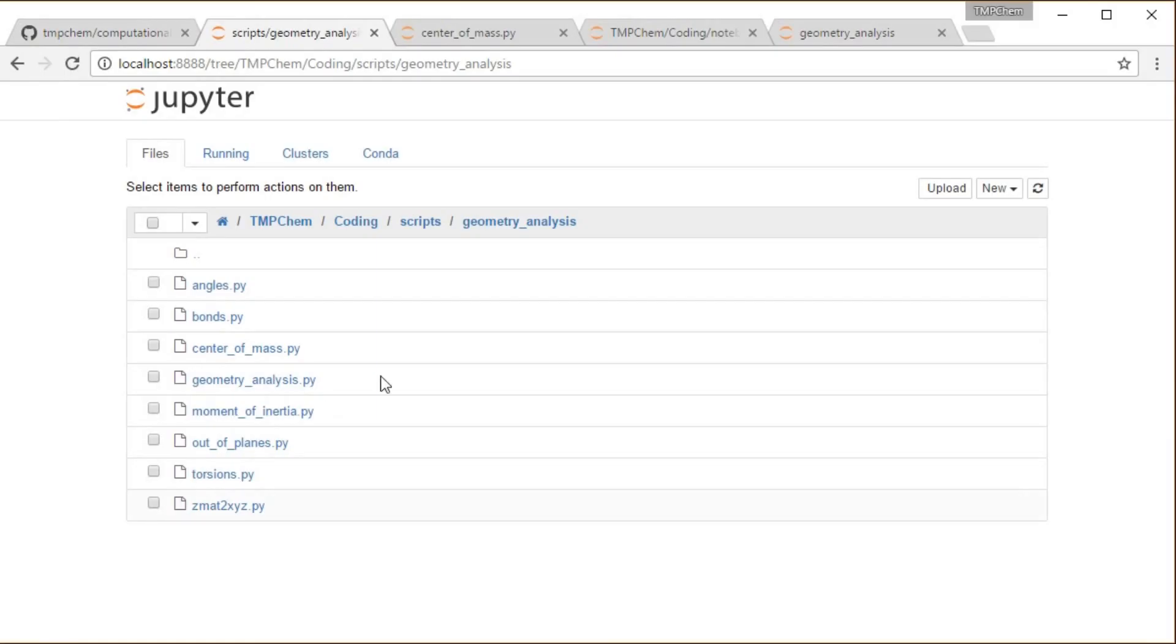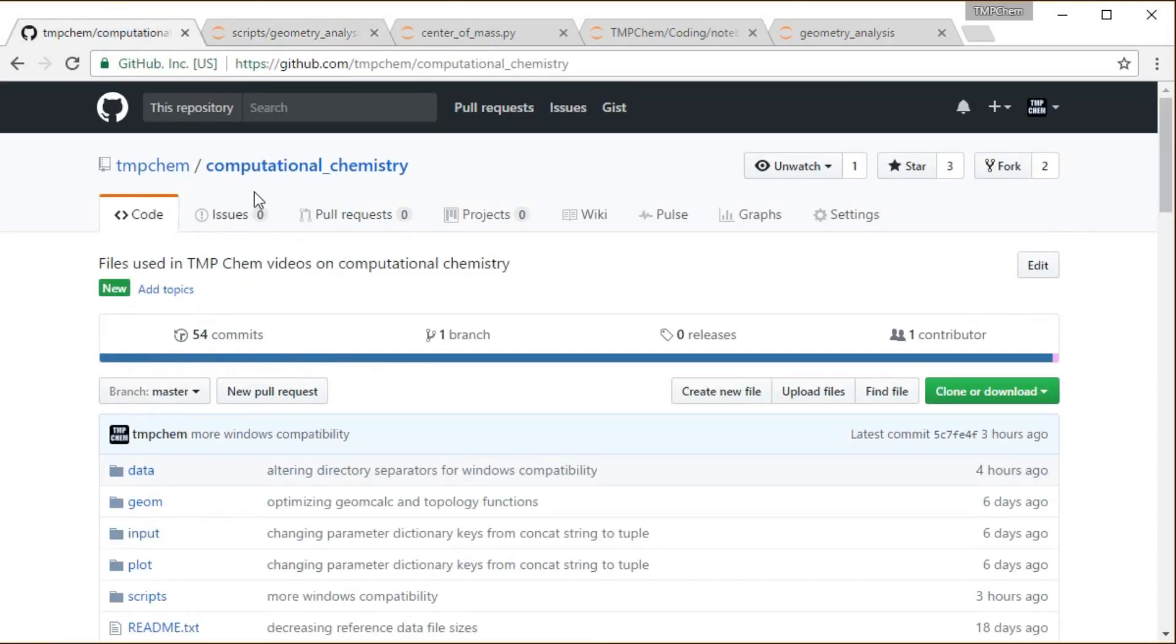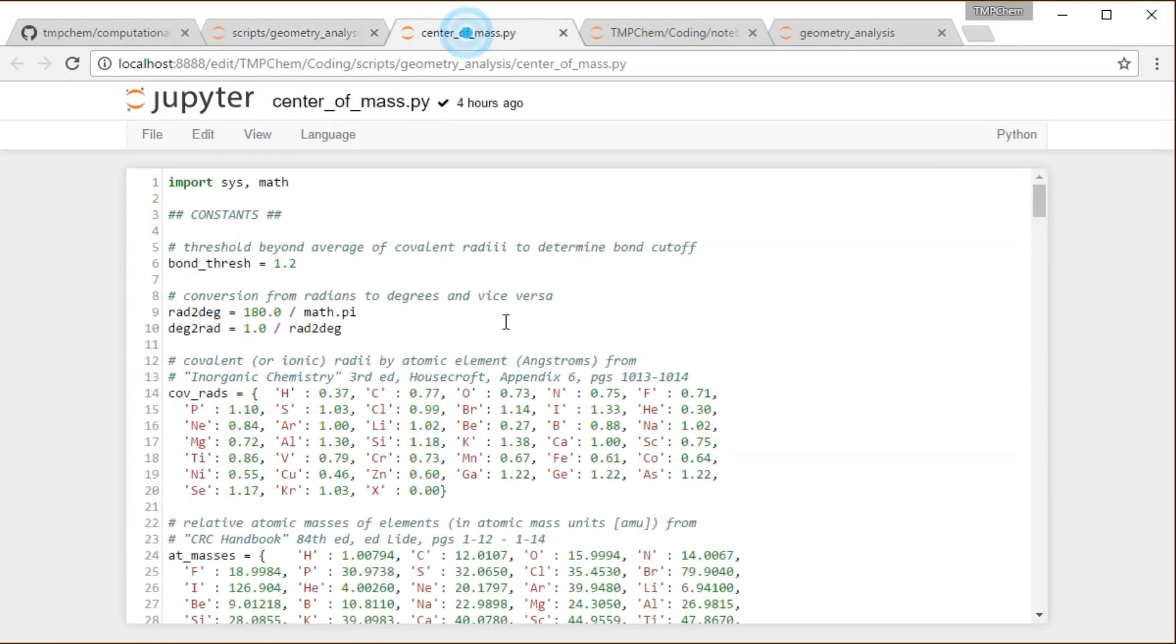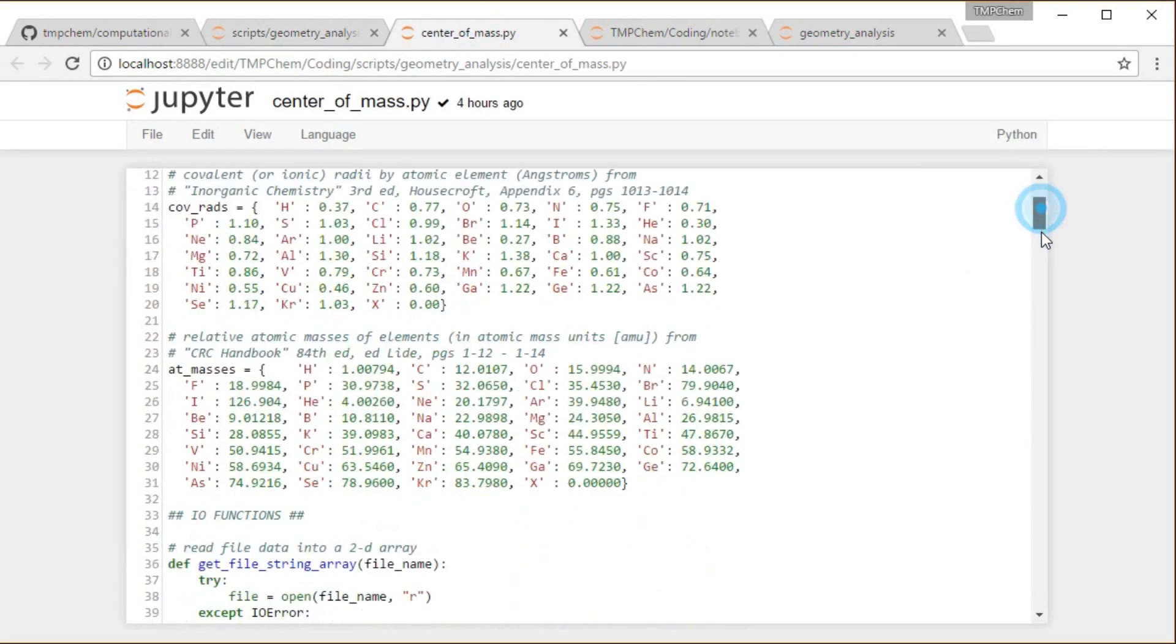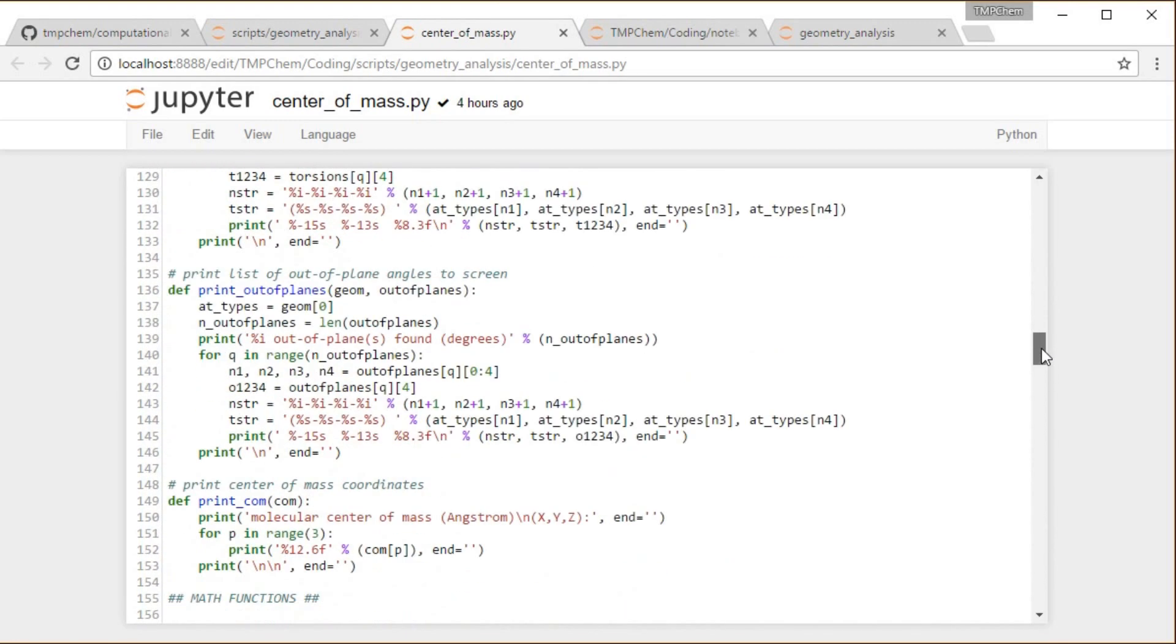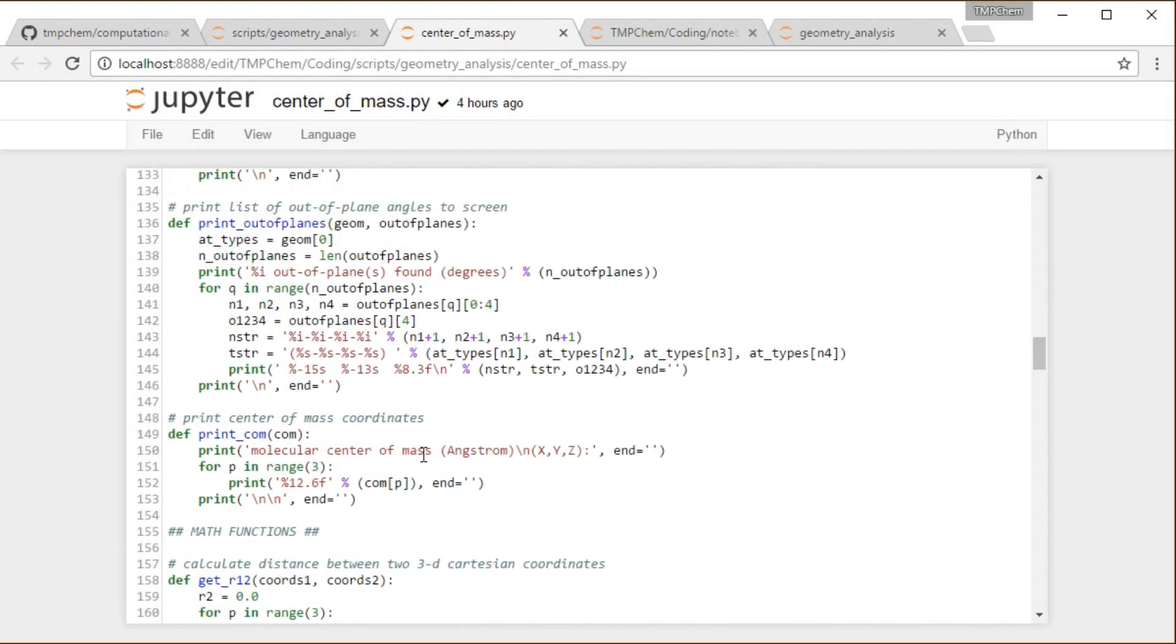Alright, so let's take a look again. Once again we're looking in my GitHub computational chemistry repository. I've got that Jupyter notebook open in the scripts geometry analysis sub-directories. We have a program called centerofmass.py. That's here. The same kind of stuff we've been building on this entire chapter.